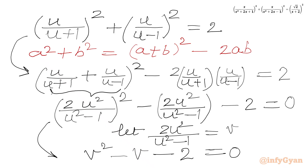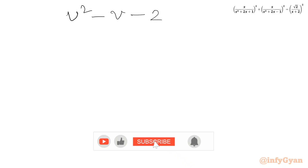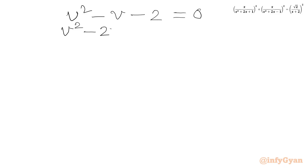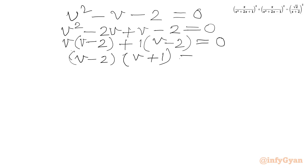Let us solve this quadratic. We write v² minus v minus 2 equal to 0. We can rewrite minus v as minus 2v plus v, giving v(v−2) plus 1(v−2) equal to 0. Now (v−2) is common, so we factor as (v+1)(v−2) equal to 0.